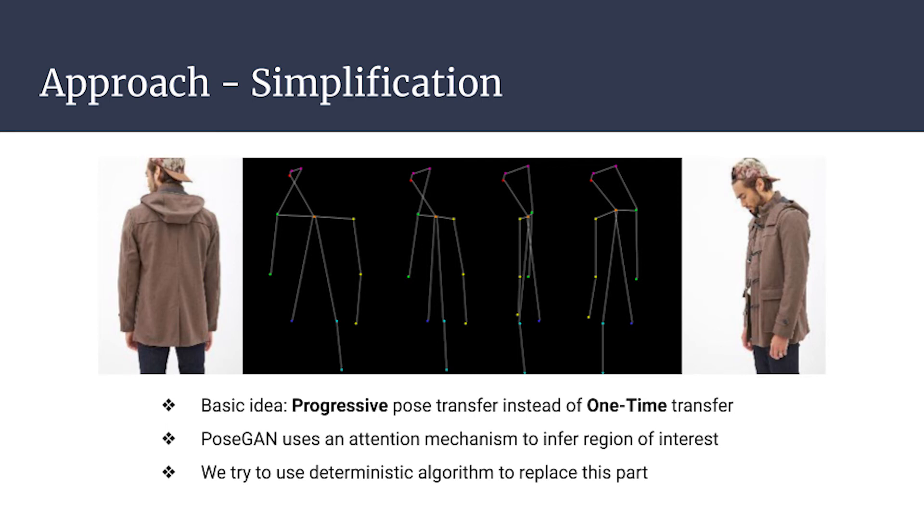The basic idea of PoseGAN is to use progressive pose transfer instead of one-time transfer. Instead of using ResNet, we directly use a deterministic algorithm. In our algorithm, we will find the least effort to transfer one pose to another. In this way, the model is expected to save a lot of parameters and accelerate its convergence.